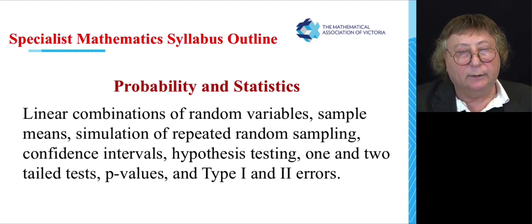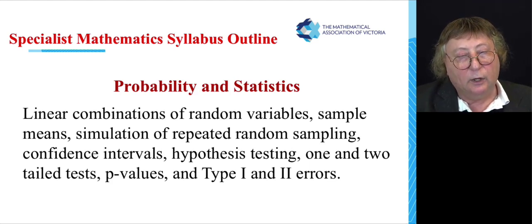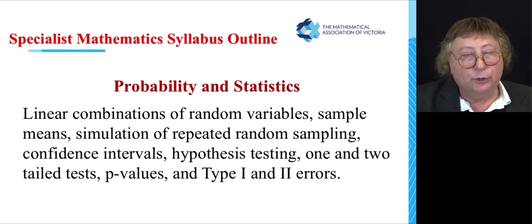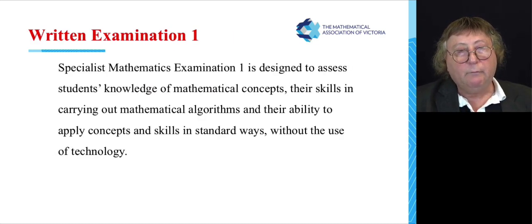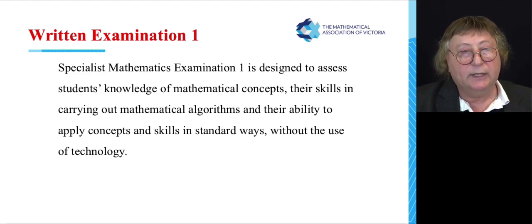Probability and statistics section: linear combinations of a random variable, sample means, simulation of repeated sampling, confidence intervals for the mean of a population, hypothesis testing, one and two tailed tests, p-values, and also knowing what the type one and type two errors are. Alright, so a little bit about exam one. What happens in exam one?